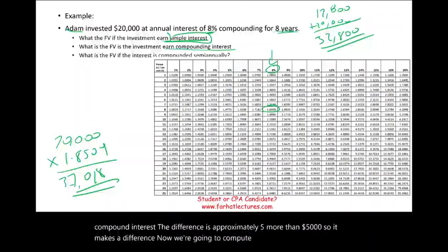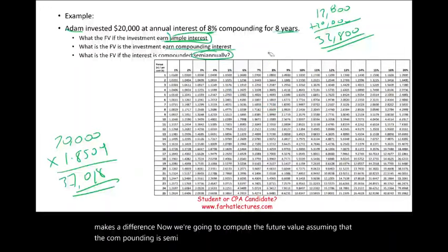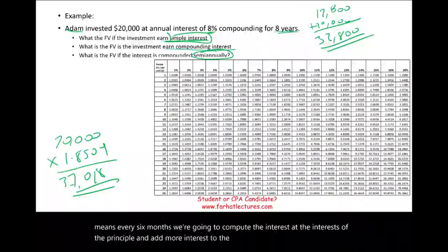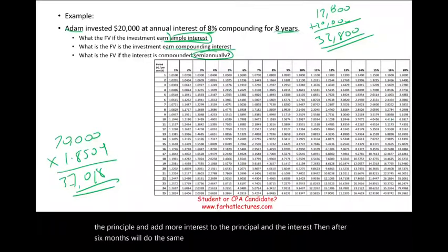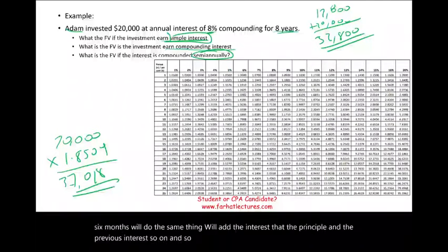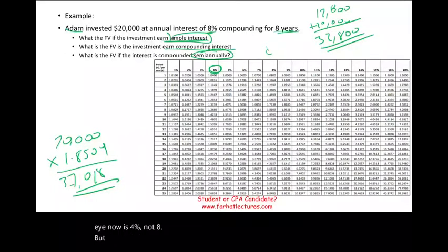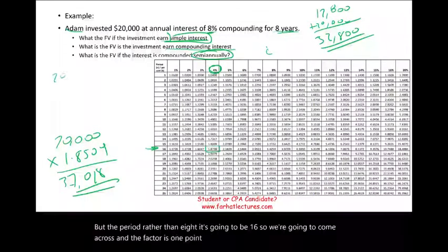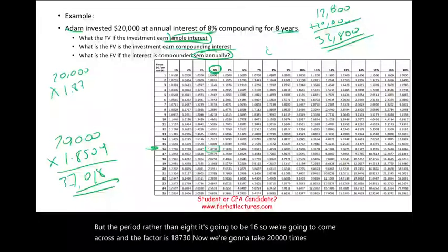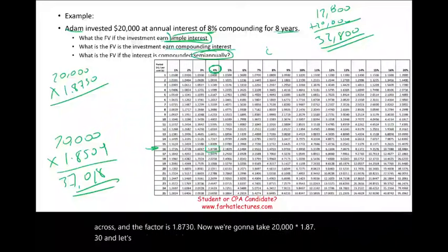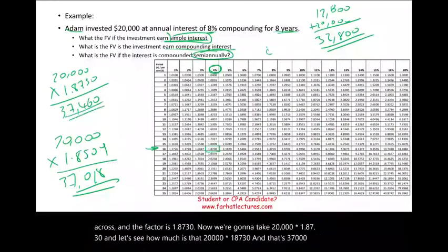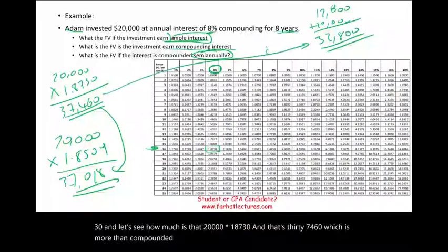Now let's compute the future value assuming compounding is semi-annually — meaning every six months we compute the interest and add it to the principal. When going to the table, we must adjust: i becomes 4% (not 8%), and n becomes 16 (not 8). The factor at i = 4%, n = 16 is 1.8730. So $20,000 × 1.8730 = $37,460, which is more than compounded annually and much more than simple interest.